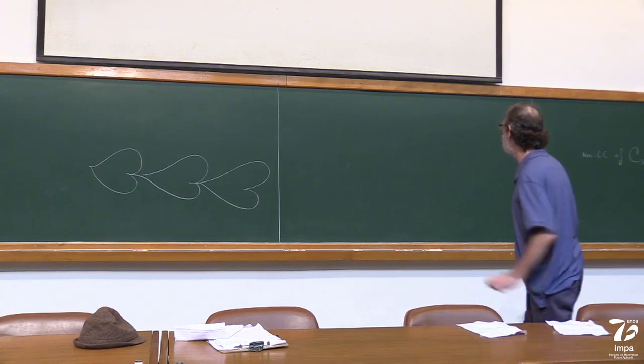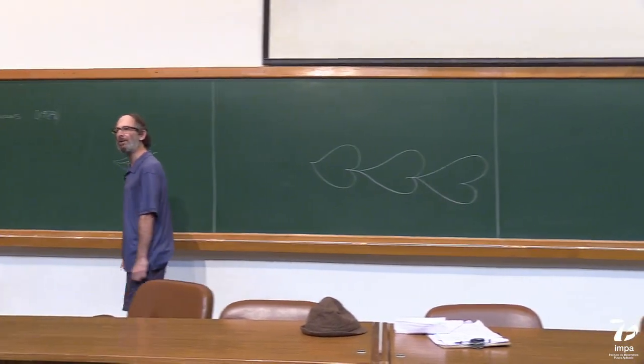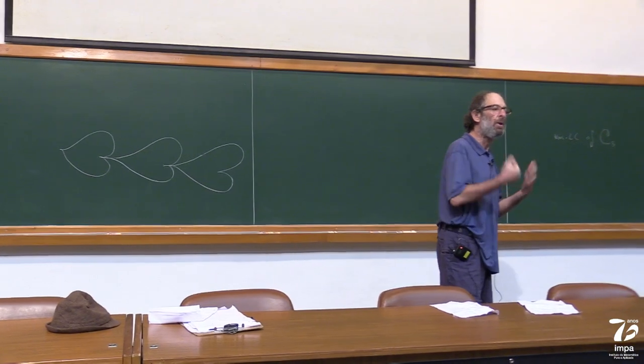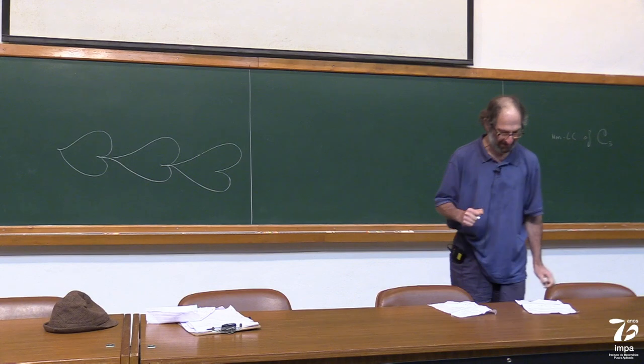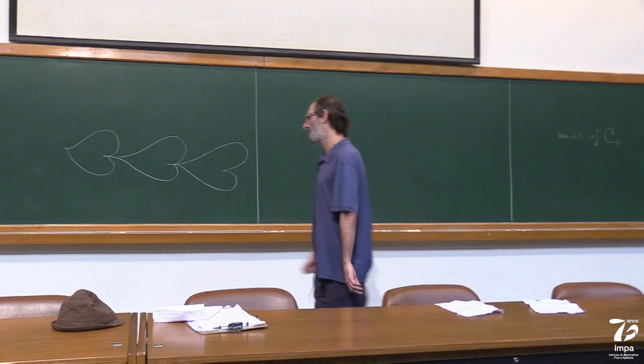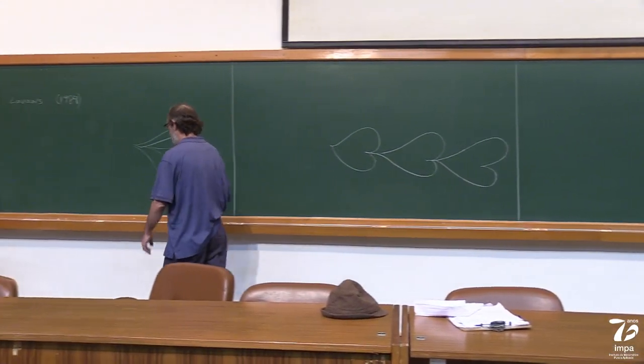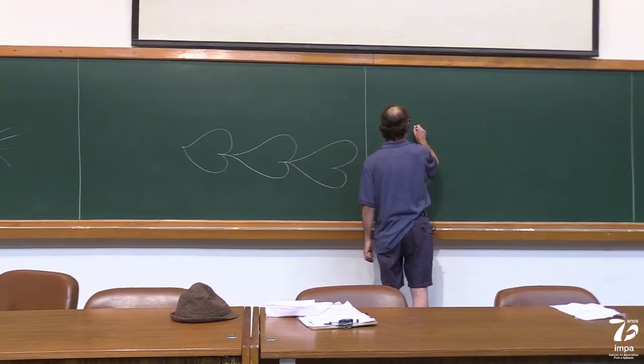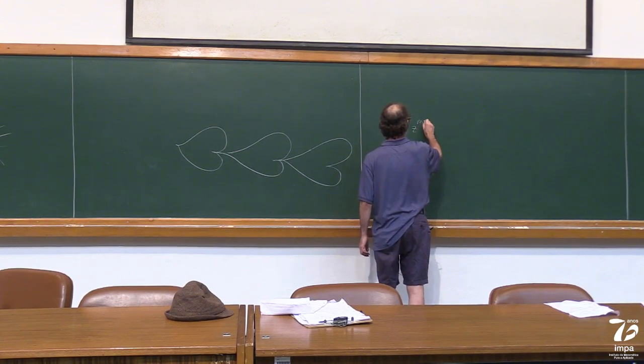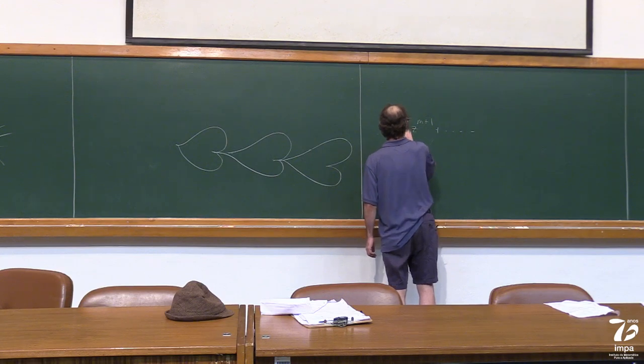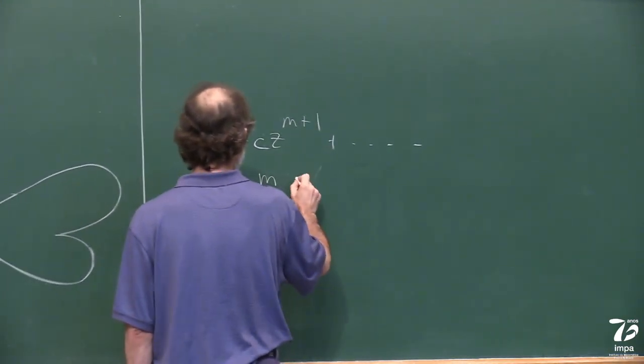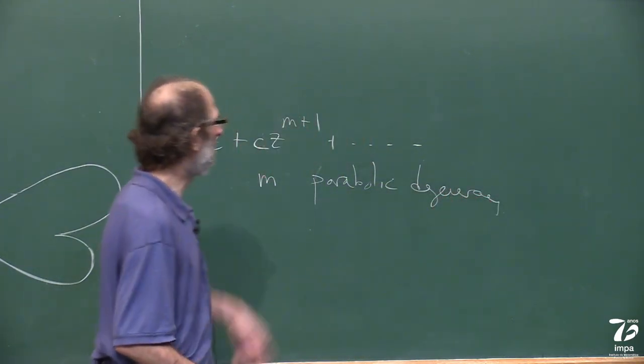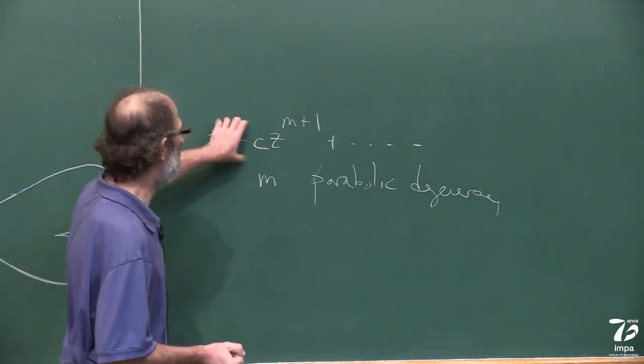I need to say something about parabolic points. Parabolic is going to mean when the multiplier is one or more generally a root of unity. Why is multiplier one significant in dynamics? Because it's pervasive. The identity map seems like the most trivial thing dynamically, but if you're looking at perturbations of the identity, that's probably the richest field there is because the identity map is very unstable.